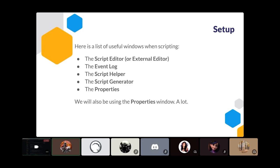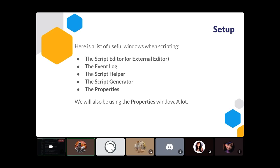When scripting in Core, the number-one helpful window is the script editor. There's an external editor tool — if you're comfortable with Atom or VS Code, which is the one I use most, it has features like replacing variable names, finding references across scripts, and autocompleting function names. I highly advise getting familiar with the external editor if you're doing a lot of scripting, but for this demo I'll use the internal editor.